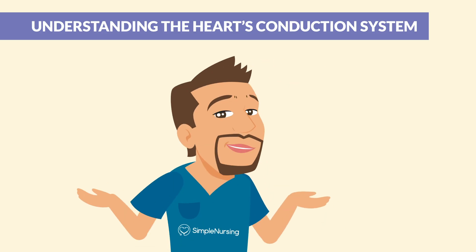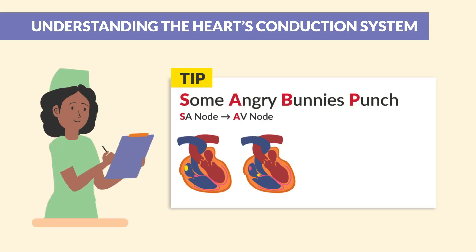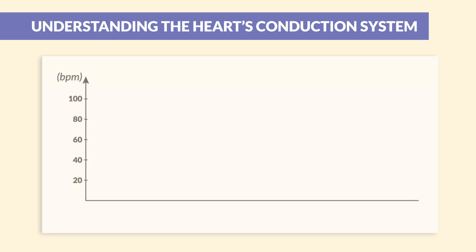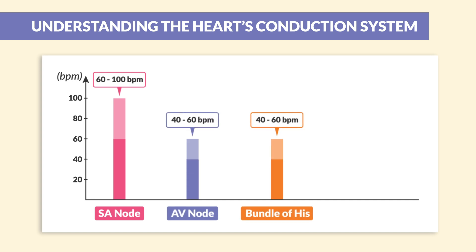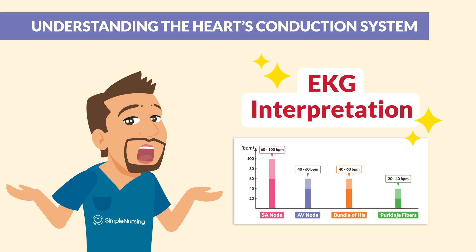Here's a sticky tip to remember it all — say it with me: 'Some angry bunnies punch.' This stands for the SA node, AV node, B for bundle of His, and P for the Purkinje fibers. Here's a quick reference on the rates: the SA node fires at 60 to 100 beats per minute; the AV node and bundle of His beat around 40 to 60 beats per minute; and the Purkinje fibers take over at 20 to 40 beats per minute. Make sure to put that in your back pocket — it's gold for EKG interpretation.